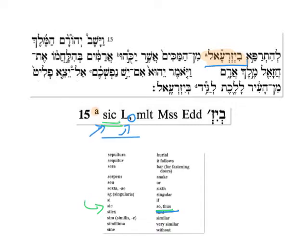As we continue to decode the note, we see that the editor says, after the comma, many or multiple manuscripts and editions of the Hebrew Bible have a schwa under the Beit, and then a hirik under the Yod, then a schwa under the Zayin, and then this mark here chops off the rest of the word. That's the way the BHS does abbreviations — we see that in the BDB and other dictionaries as well. The rest of the word is as it stands up here in the text, so the difference is only at the beginning.